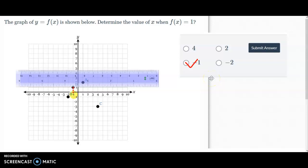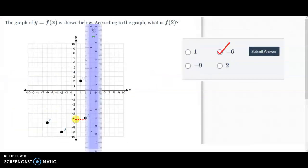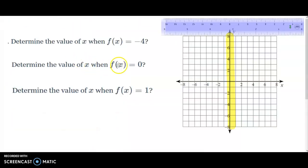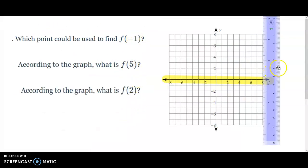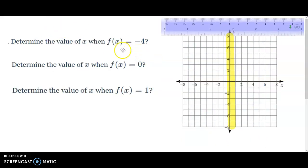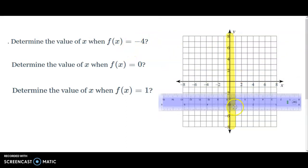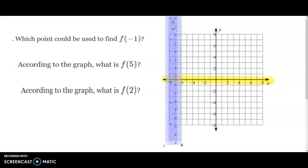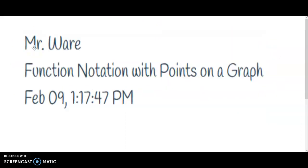So again, the main thing is to make sure you pay attention to whether it is f of a number — which means you go down the x-axis — or f of x is equal to a number — which means you go down the y-axis. But that's it. That is function notation with points on the graph. Thank you for checking out Mr. Ware's videos, have a nice day.